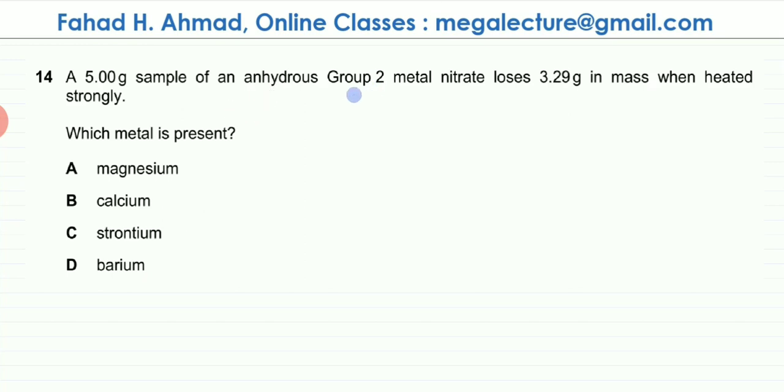Now it's a Group 2 metal nitrate, so the formula of the metal nitrate - I don't know which metal nitrate it is - X would be +2, the nitrate NO3 would be -1, so the formula of the nitrate is going to be X(NO3)2.